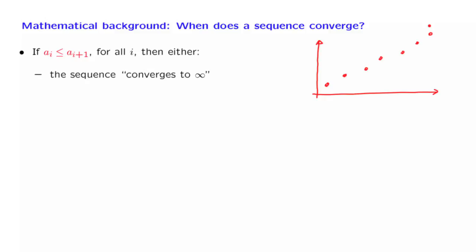But if this is not the case, if it does not converge to infinity, which means that the entries of the sequence are bounded, they do not grow arbitrarily large, then in that case, it is guaranteed that the sequence will converge to a certain number. This is not something that we will attempt to prove, but it is a useful fact to know.